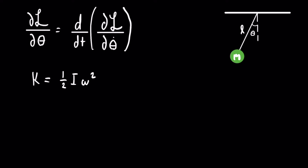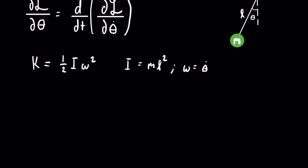In a simple pendulum all the mass is concentrated at one location, so we could say that the moment of inertia is equal to just ml squared. Also, we are describing the motion of this pendulum in terms of the angle, which means we need to write the angular velocity in terms of the angle, so instead of omega we write theta dot. With that, our kinetic energy equation is equal to one half ml squared times theta dot squared.